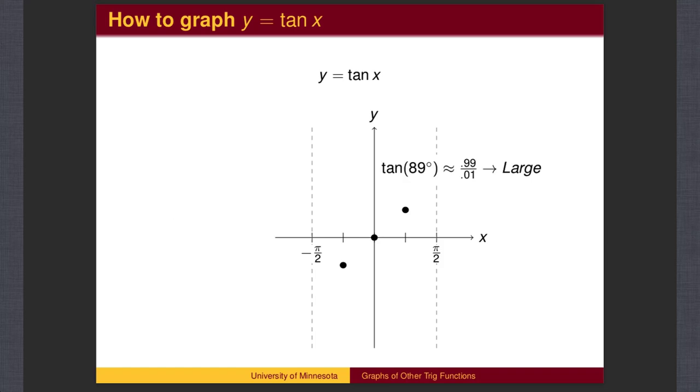Now, back to what is happening near pi over 2 and negative pi over 2. When we have an angle that is just a little smaller than pi over 2, the sine value is almost 1, and the cosine value is almost 0, but both are positive. When we divide, the answer is very large.